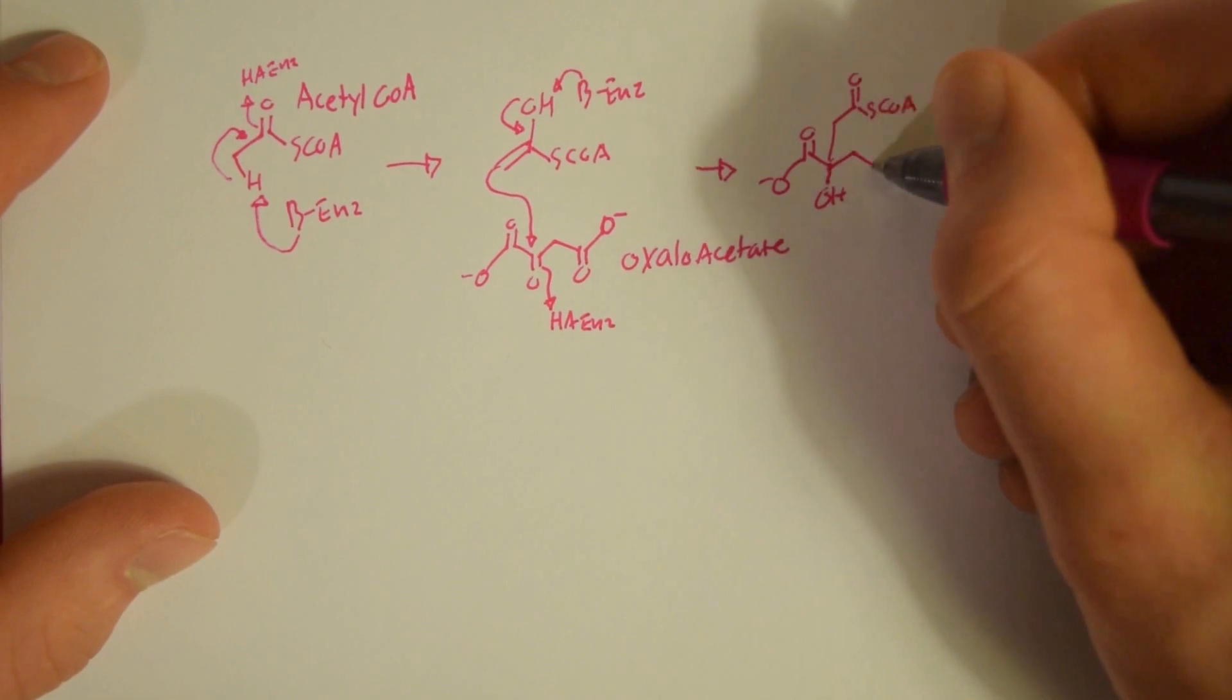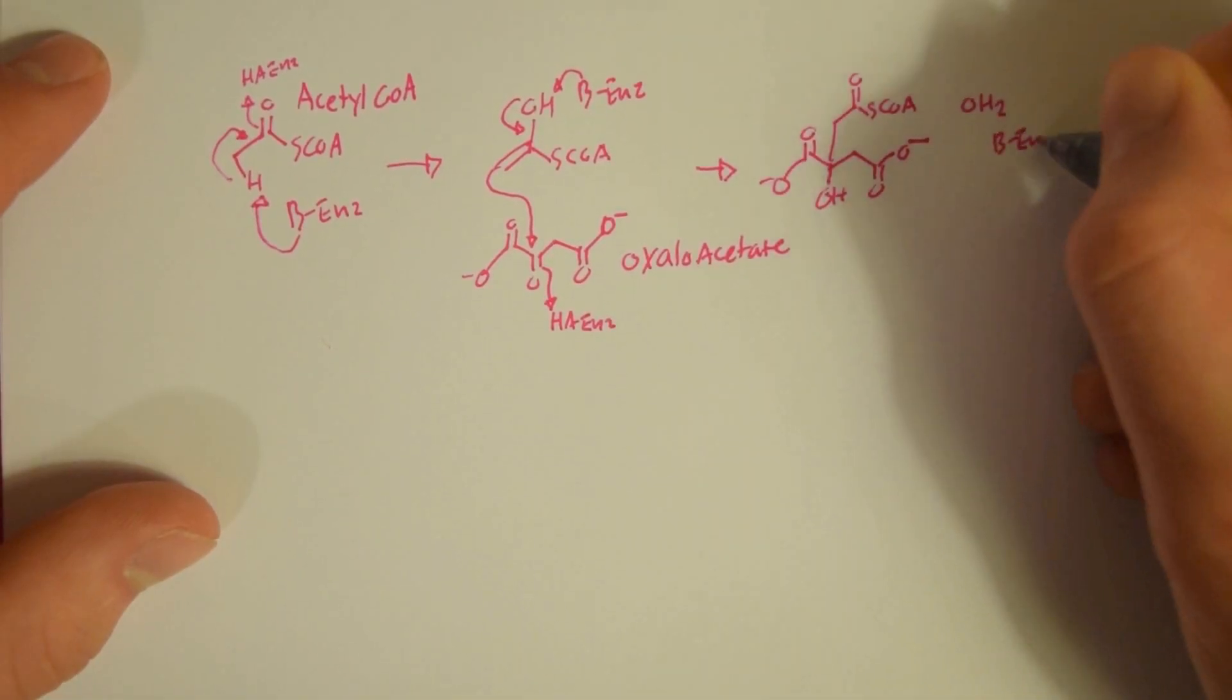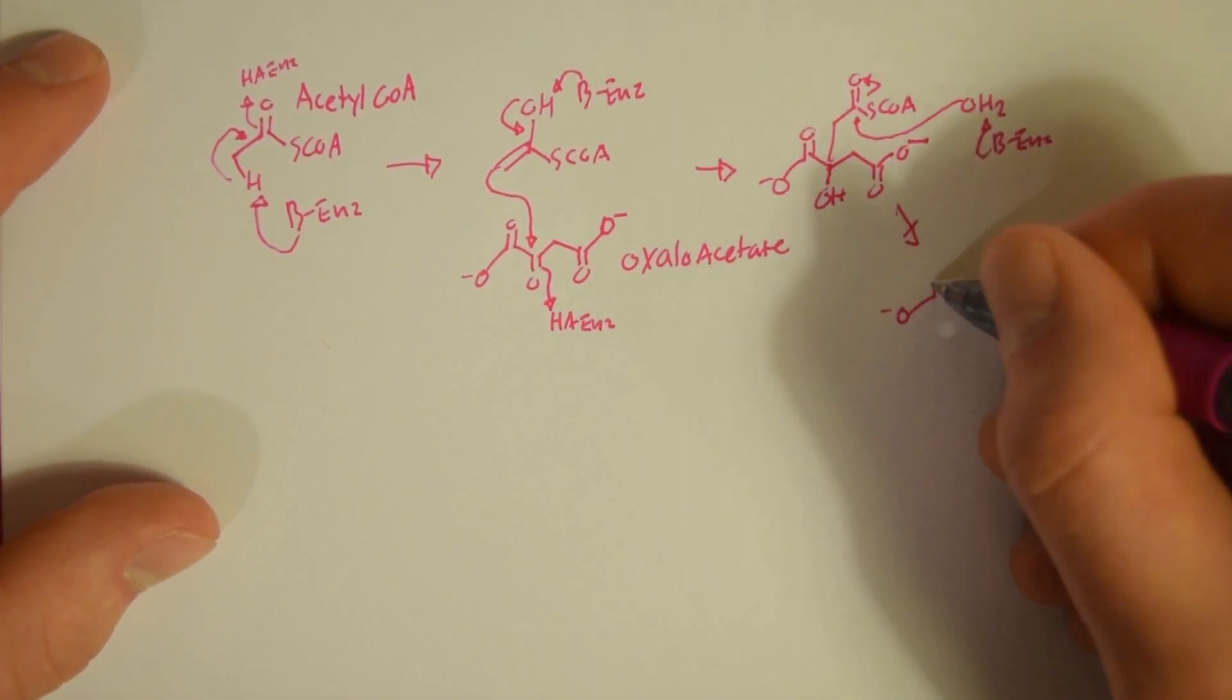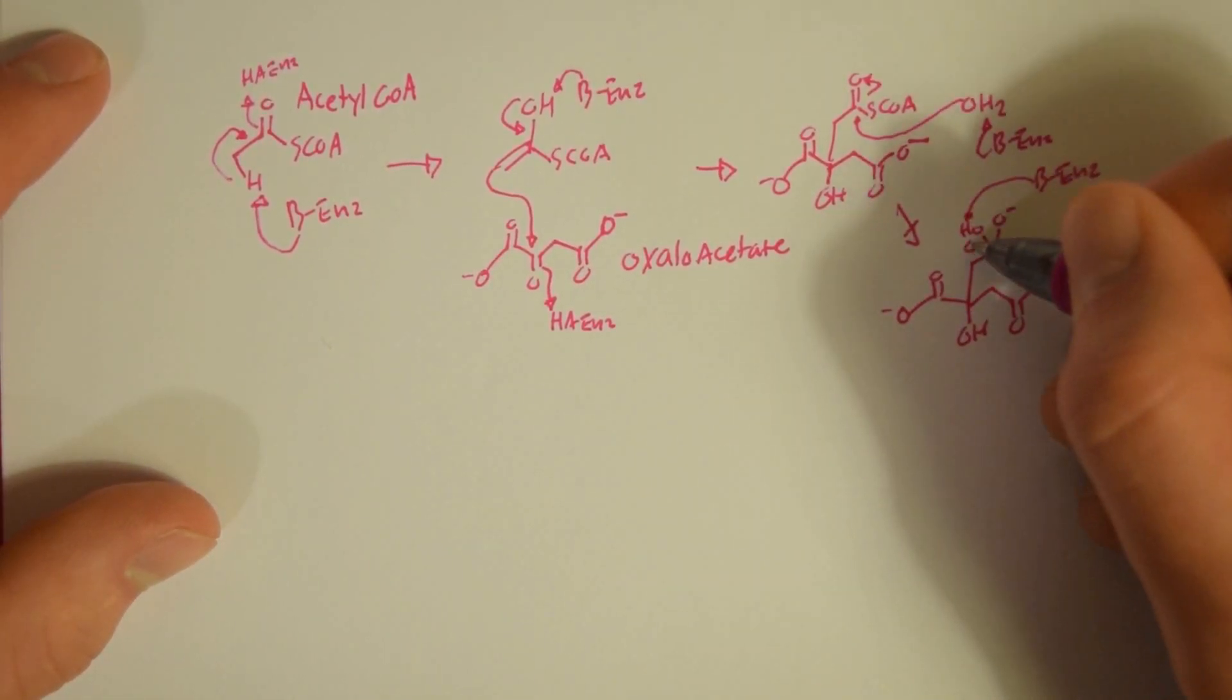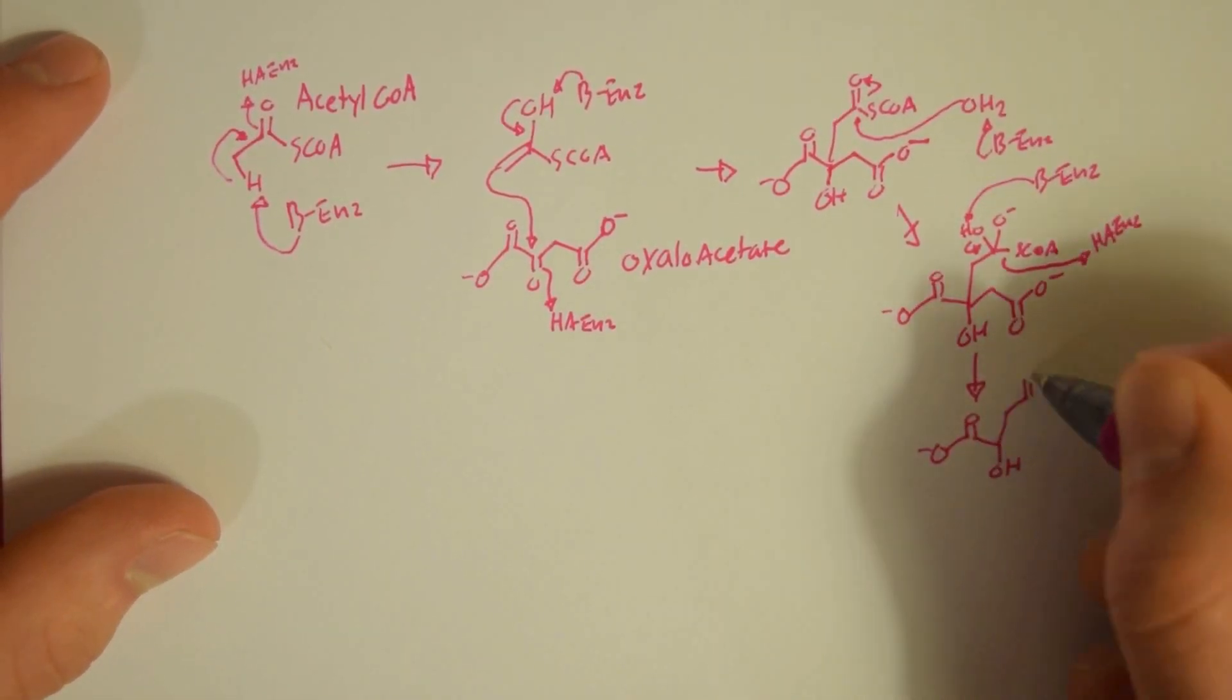Next we're going to take water and we're going to add water to the molecule, and then we're going to kick off CoA again so we can reuse it at the beginning of the cycle. Then that molecule has formed is called citrate.